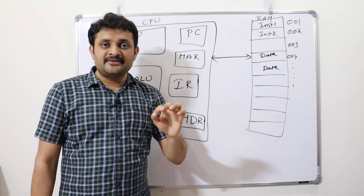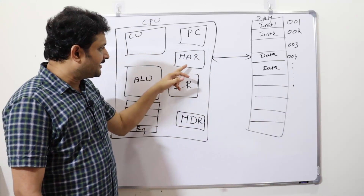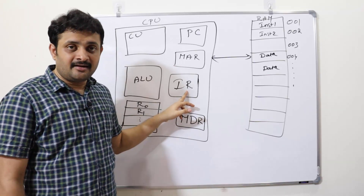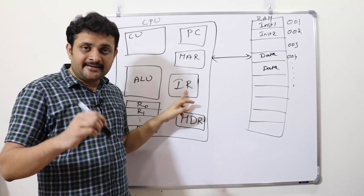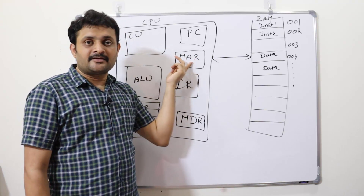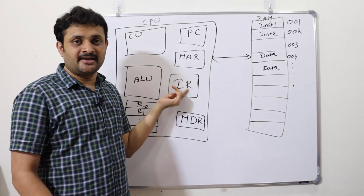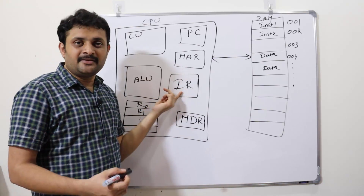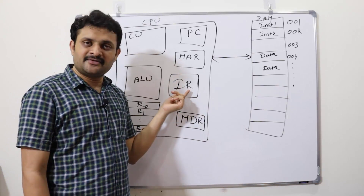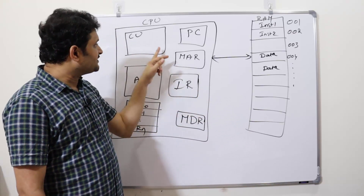One important point: MAR always holds the currently executing instruction address. Next, the Instruction Register (IR) holds the instruction specified at that particular address location. From the IR, the instruction is passed to the control unit, which controls the entire operational flow in the CPU.